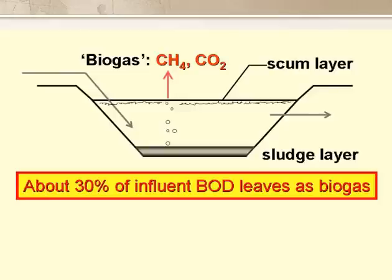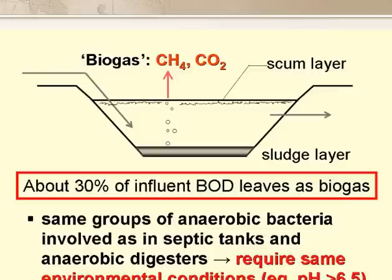Often around 30% of the influent BOD leaves the pond as biogas, CH4 and CO2. There are the same groups of anaerobic organisms in anaerobic ponds as in other anaerobic reactors, like septic tanks and anaerobic digesters, and they require the same environmental conditions, such as a pH above 6.5.